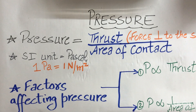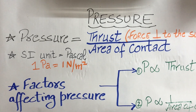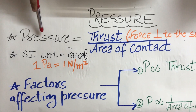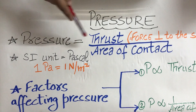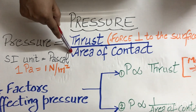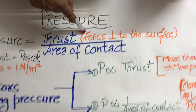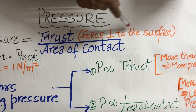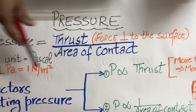Hello and welcome. Today's lesson is all about pressure. Pressure is denoted by capital P and is thrust per unit area of contact, where thrust is the perpendicular force which is applied to any surface or any object.